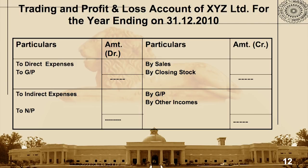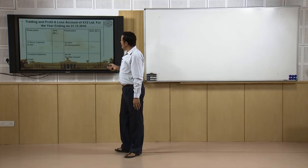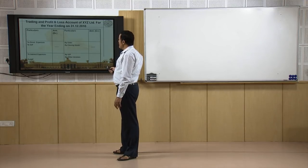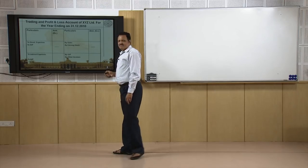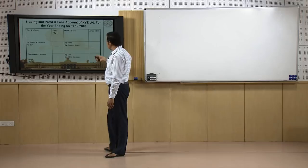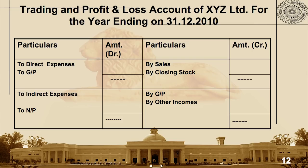You have to be careful about this title: trading and profit and loss account of XYZ Limited for the year ending on a specific date. This statement depicts the results of the business for a period of 12 months — in this case the calendar year beginning on 1st January and ending on 31st December. This is the profit and loss account.